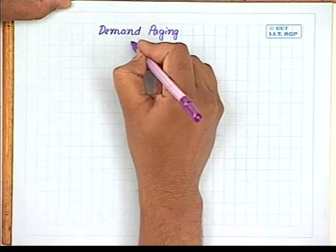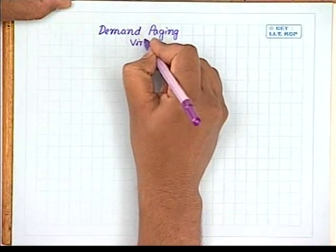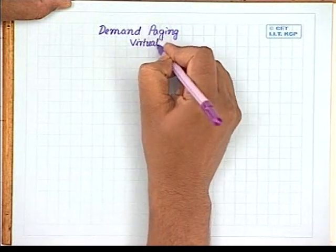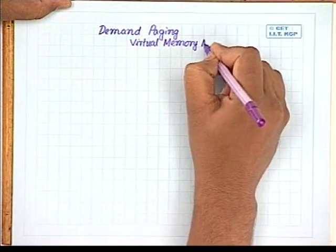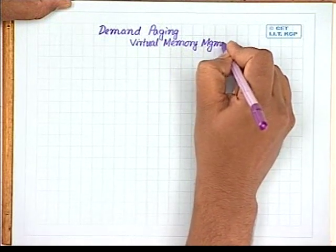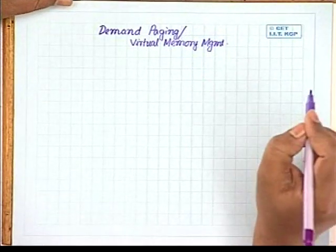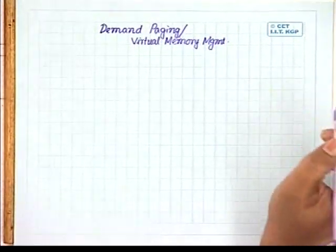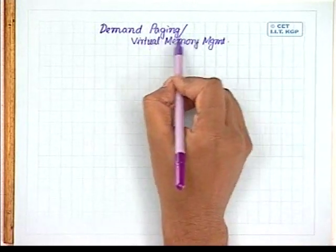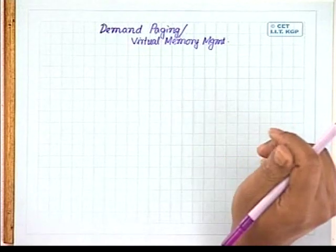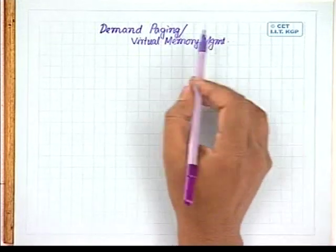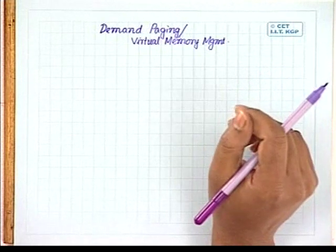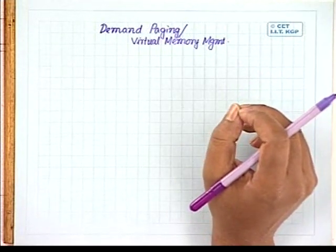Demand paging is also known as virtual memory management. In case of demand paging or virtual memory management, as the name implies, this is a sort of paging technique — the main memory will be divided into a number of partitions of equal size or a number of frames. When you execute a job, it is not necessary that all the pages of the job should reside in memory at a time.